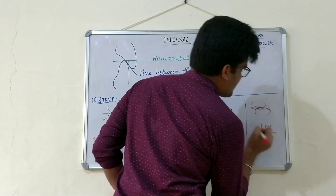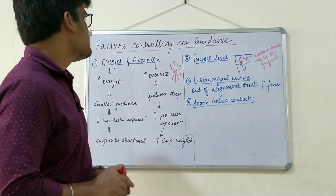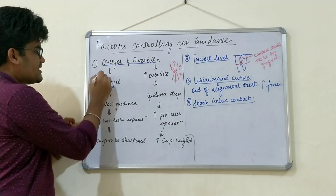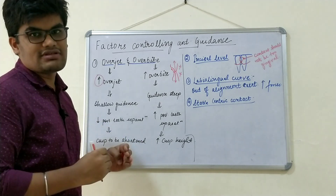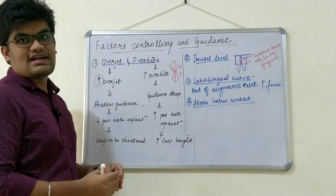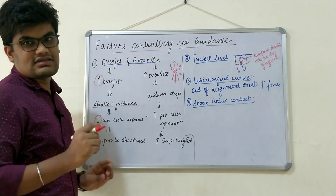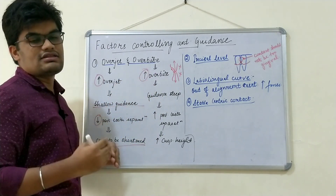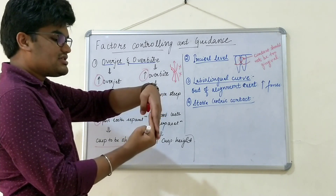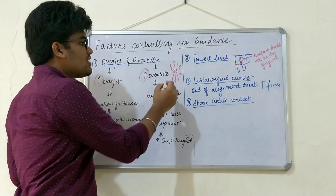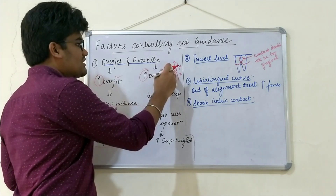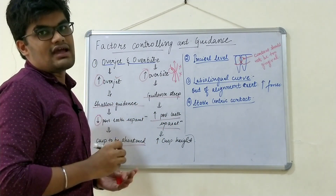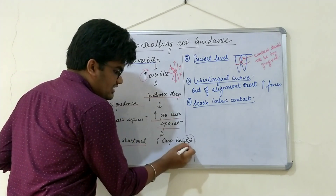The first factor controlling anterior guidance is overjet and overbite. If overjet is increased, horizontal overlap is increased, leading to shallow guidance. Shallower guidance means less posterior tooth separation, so we need to shorten the posterior cusp height. Conversely, if overbite is increased, the vertical overlap is greater, so the lower incisor covers a longer path to reach edge-to-edge, resulting in steeper guidance, more posterior teeth separation, and allowing us to increase the cusp height.